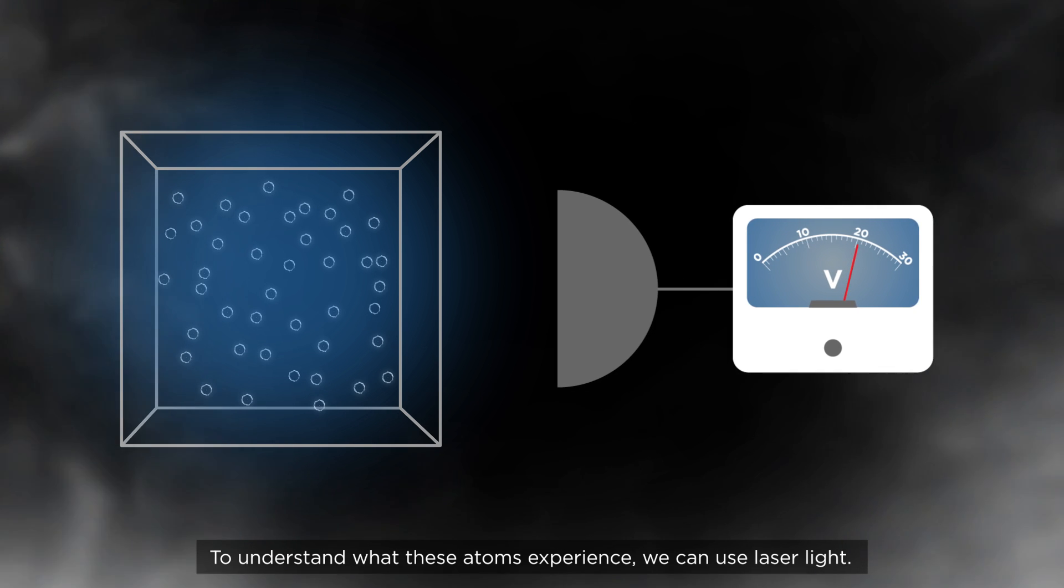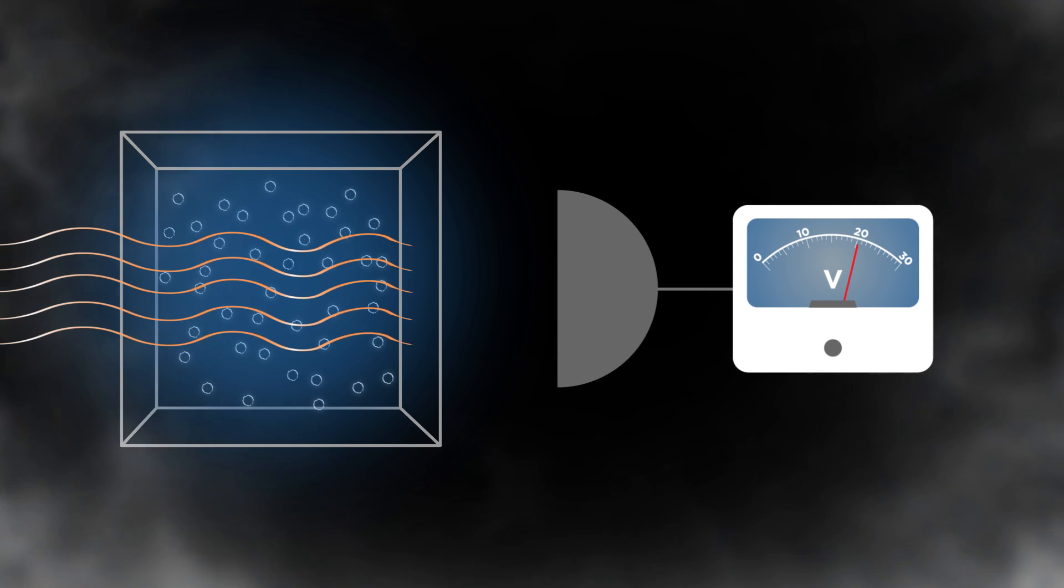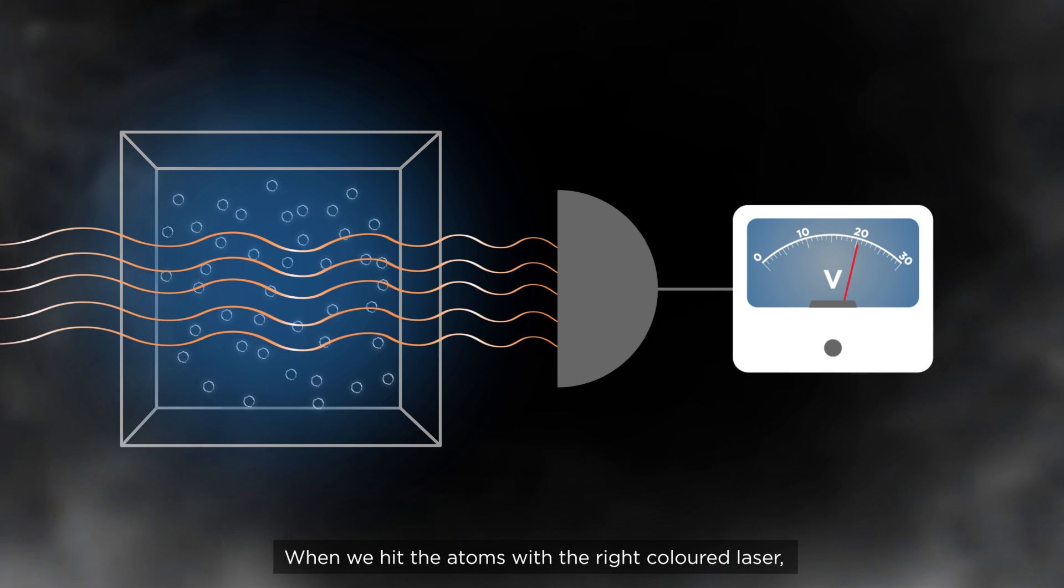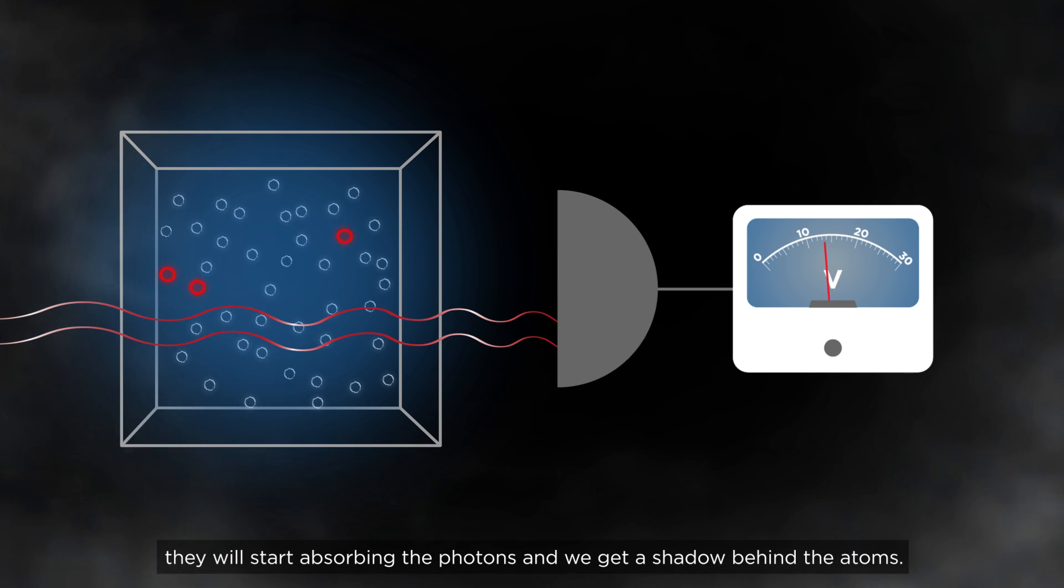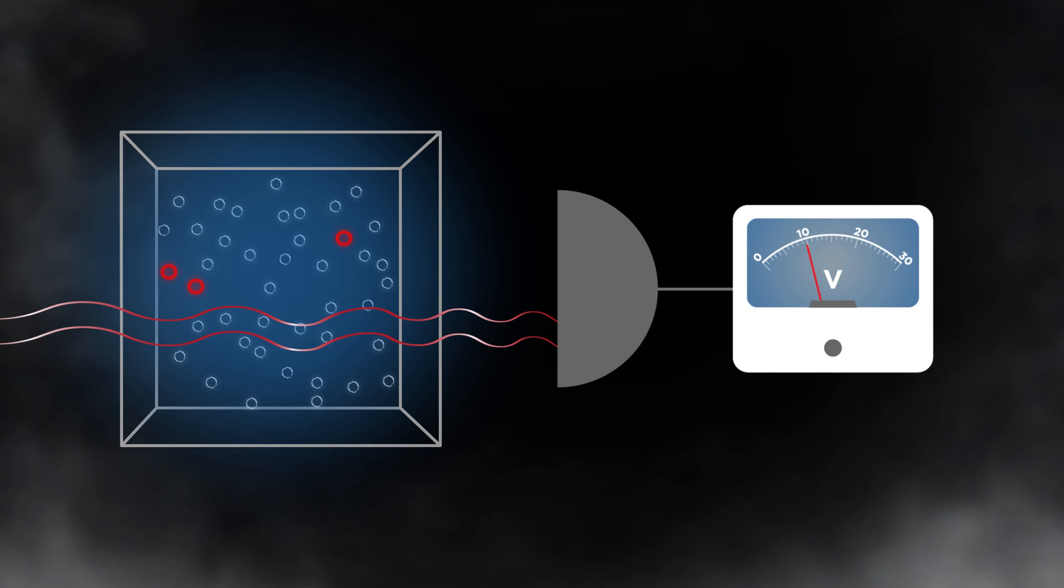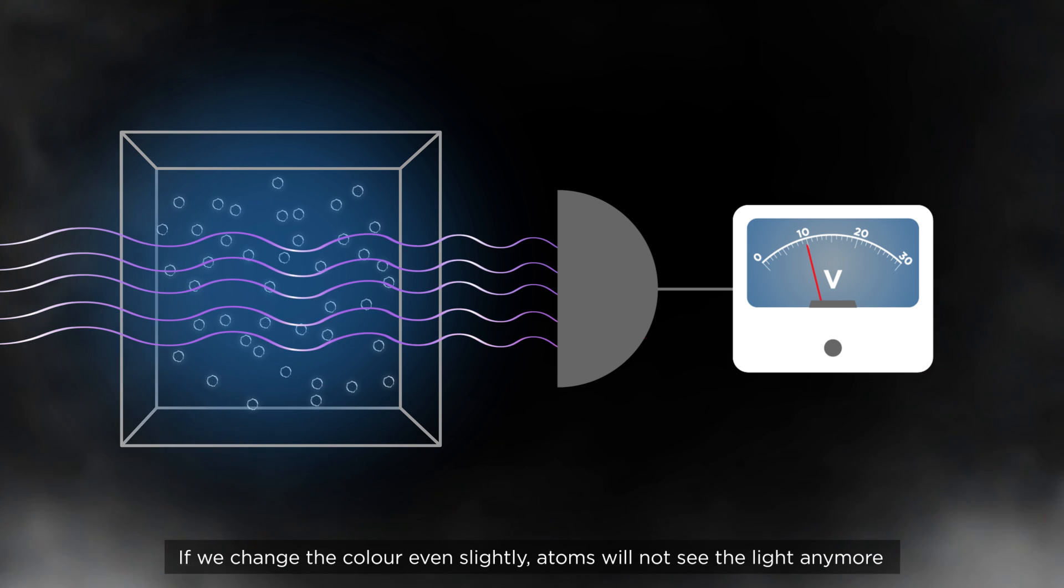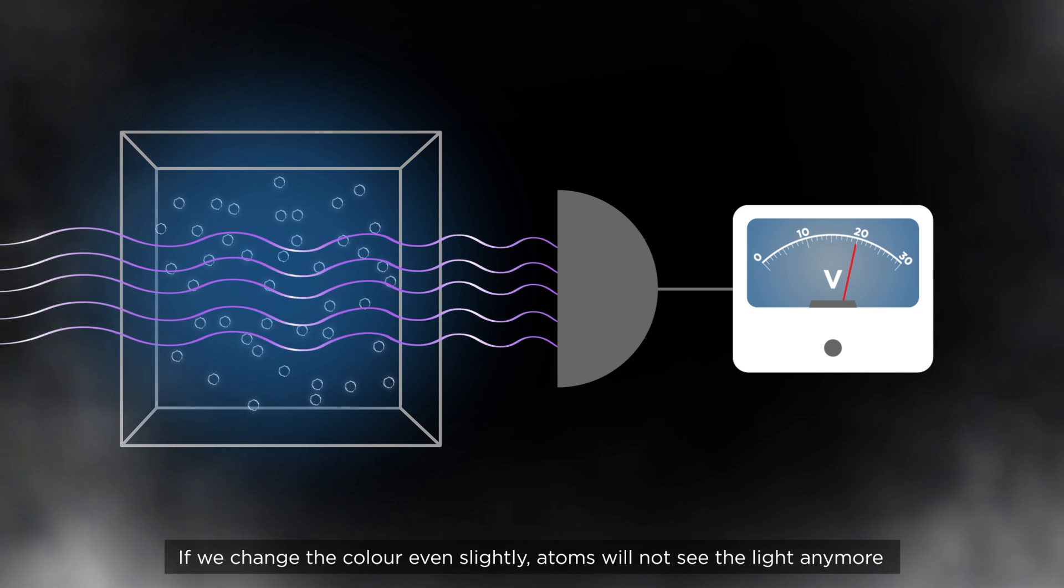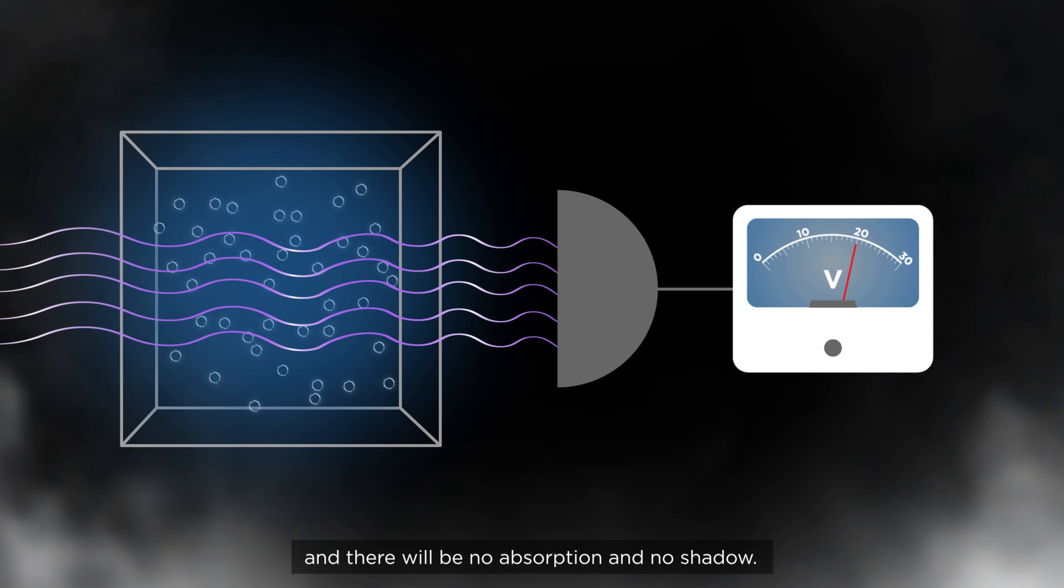To understand what these atoms experience, we can use laser light. When we hit the atoms with the right colored laser, they will start absorbing the photons, and we get a shadow behind the atoms. If we change the color even slightly, atoms will not see the light anymore, and there will be no absorption and no shadow.